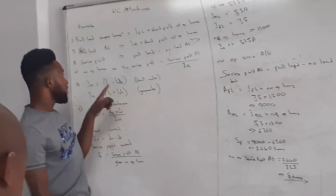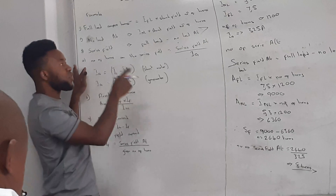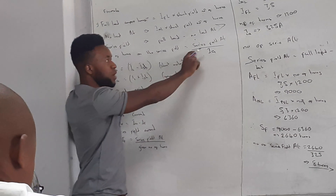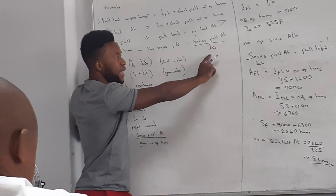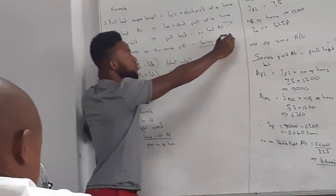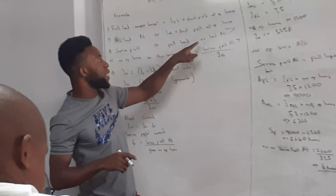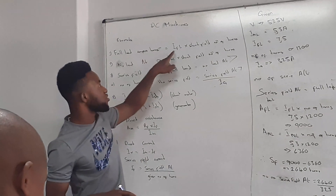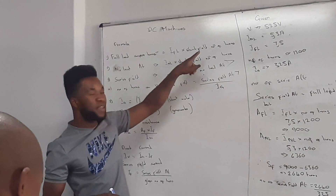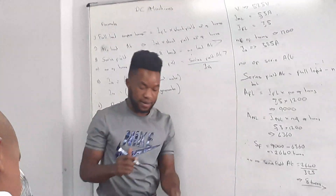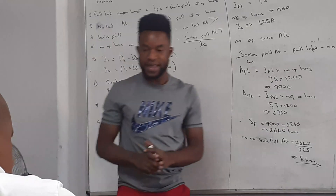To summarize: the formula to calculate the number of series turns is series field AT divided by armature current. The series field AT equals AT_full_load minus AT_no_load. AT_full_load is I_full_load times the number of turns, and AT_no_load is I_no_load times the number of turns. That gives you your complete answer.